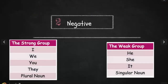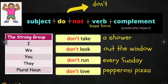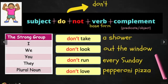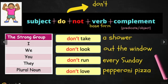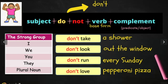Now the negative form. We're going to continue to use the same groups. For the strong group, we're going to use this formula: subject plus do plus not plus verb in base form plus complement. Remember that do and not becomes don't. Examples: I don't take a shower, we don't look out the window, they don't love pepperoni pizza.